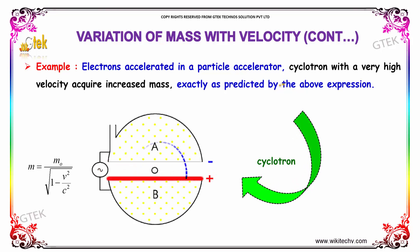A typical example for the variation of mass with velocity is electrons accelerated in a particle accelerator, the cyclotron, with very high velocity. They acquire increased mass, exactly as predicted by the expression M = M₀ / √(1 - V²/C²).